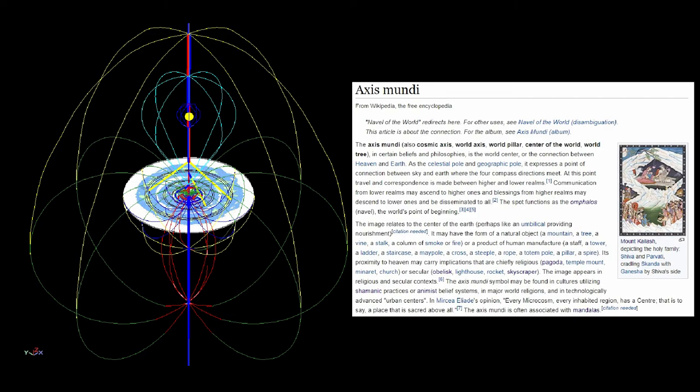Synonyms for the word disseminated include: dispersed, spread, distributed, circulated, scattered.